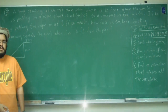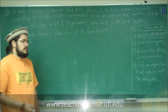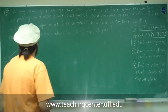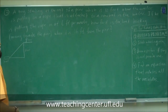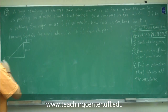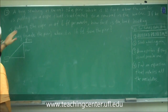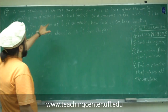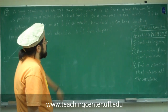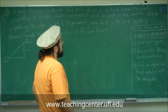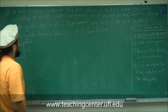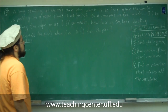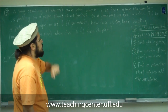Alright, so this is problem 3 of the tear-off section. Problem 3 is a related rates problem, so we have to read this out. A boy standing at the end of a pier, which is 12 feet above the water, is pulling on a rope that is attached to a rowboat in the water.